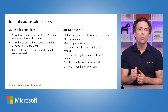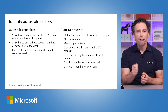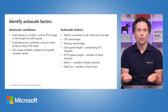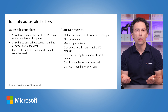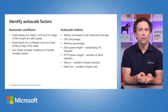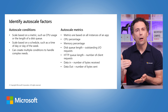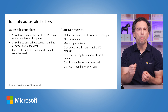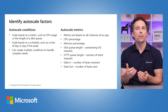When you configure AutoScale, you can create rules based on metrics and define which ones to monitor, because you know best how to tell if your application needs to be scaled out or not. Your App Service Plan can also scale on a schedule, or even mix a schedule with metrics-based rules and several other conditions.